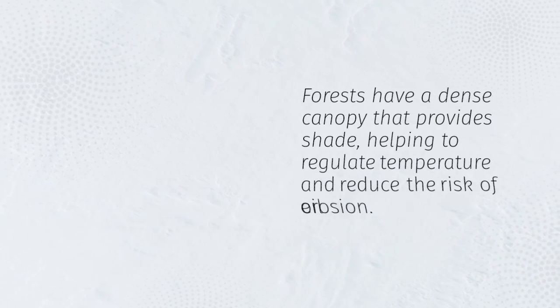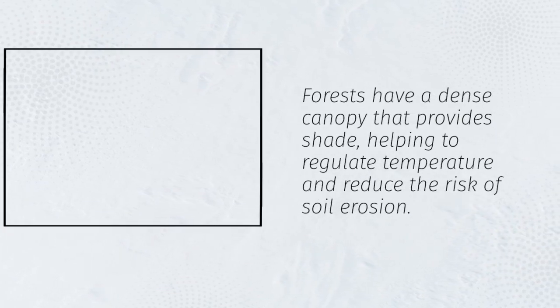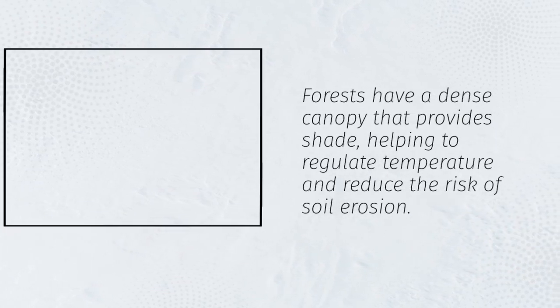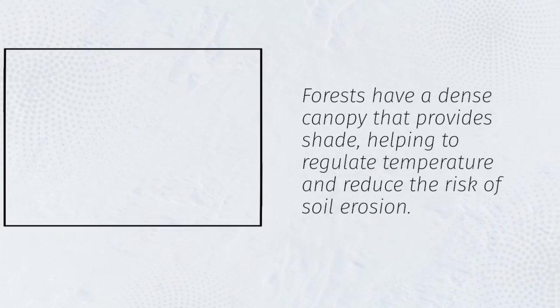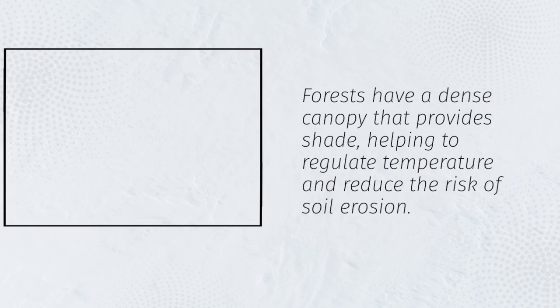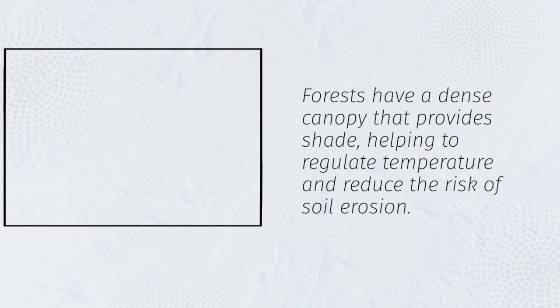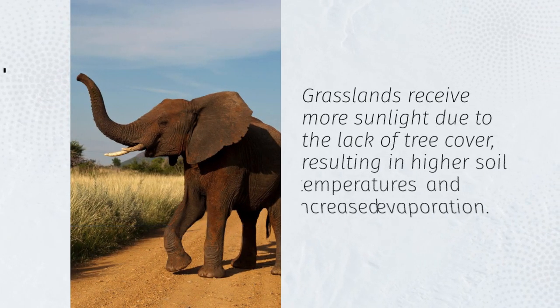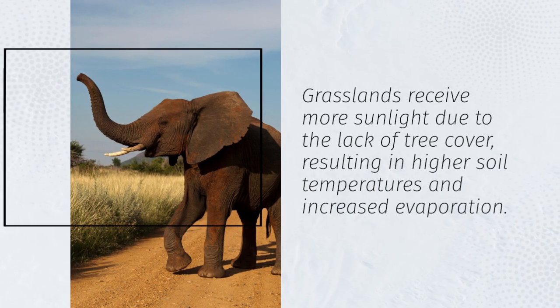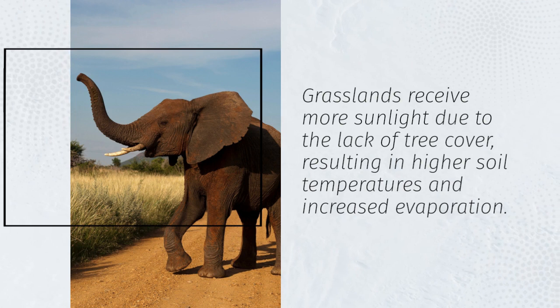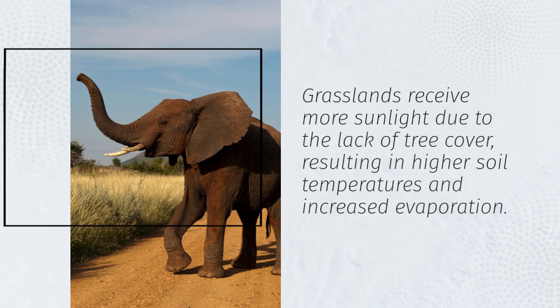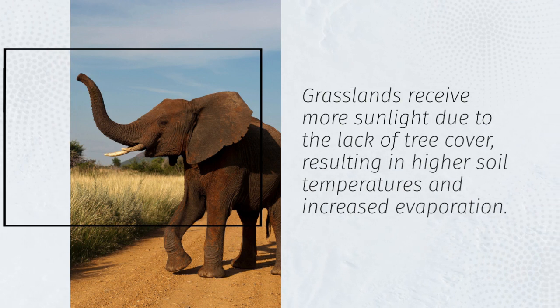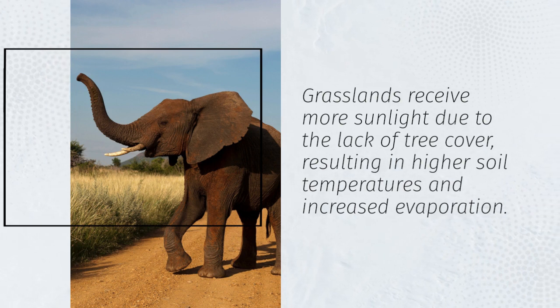Forests have a dense canopy that provides shade, helping to regulate temperature and reduce the risk of soil erosion. Grasslands receive more sunlight due to the lack of tree cover, resulting in higher soil temperatures and increased evaporation.